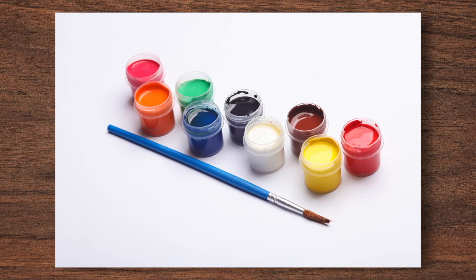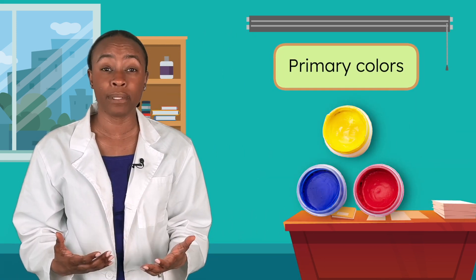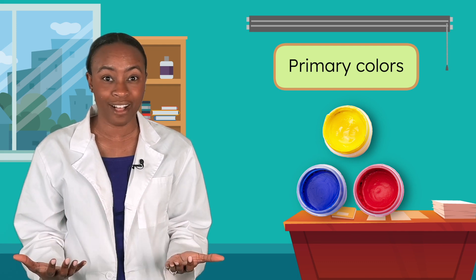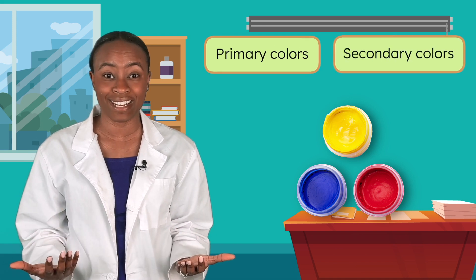Look at all these paint bottles. I can't wait to use them for my next masterpiece, but I have to put them away and sort them until it's time. We can sort them by color. Do you remember when we learned about primary and secondary colors? Primary colors are red, blue, and yellow. They're special because we can mix them to make other colors, and the colors we get when we mix are called secondary colors.